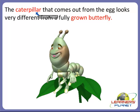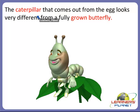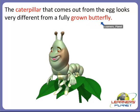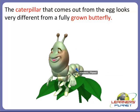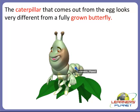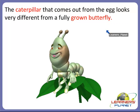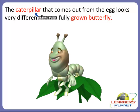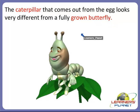First of all, it is the caterpillar that comes out from the egg. This caterpillar looks very different from the fully grown butterfly. This is a caterpillar, and you might have seen a butterfly — they look very different. But the butterfly is actually a caterpillar, because the caterpillar comes out from the egg and becomes a grown butterfly after some time. They look different while small and when grown up.